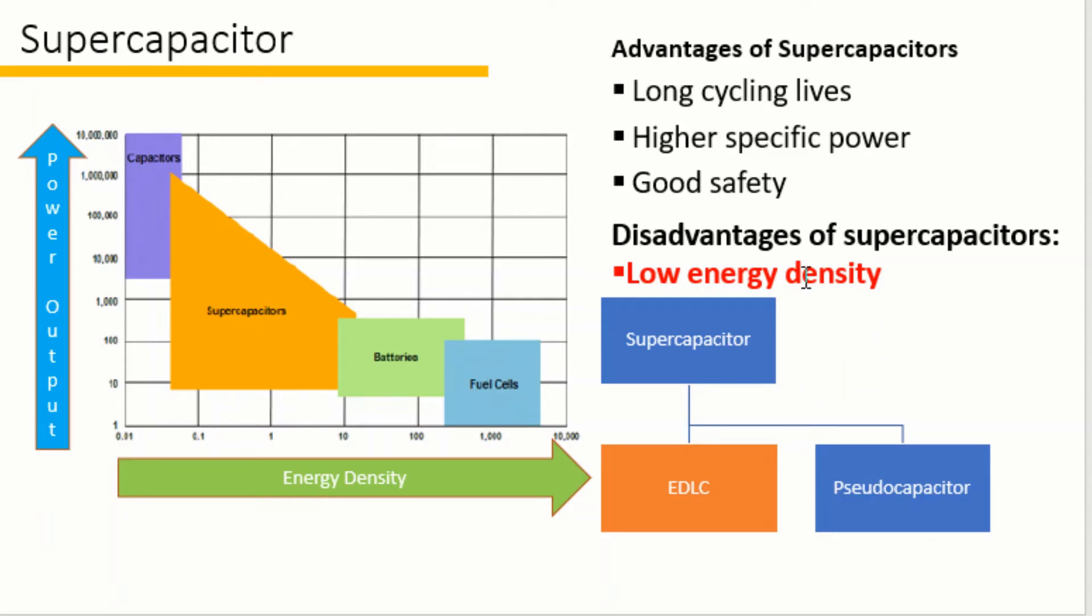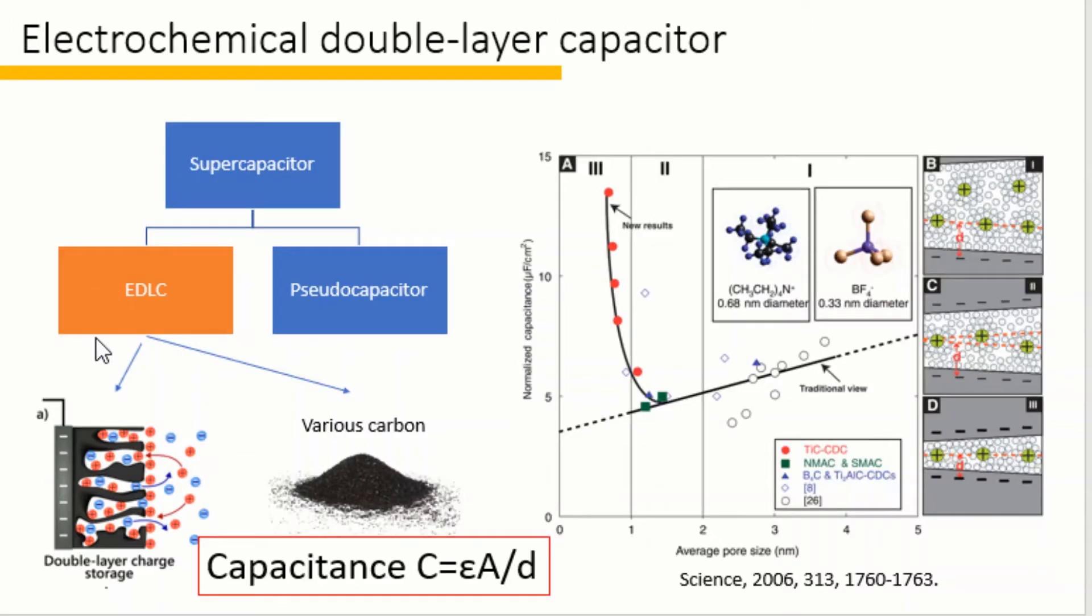There are two types of supercapacitor: the electrical double layer capacitor or EDLC and pseudocapacitor. In this tutorial we will focus on the EDLC. EDLC stores charges for energy as the electrolyte ions are adsorbed to the surface of the electrode and form the electrical double layer.